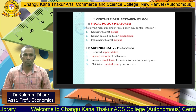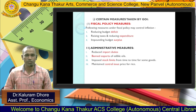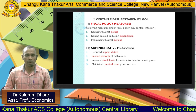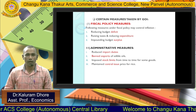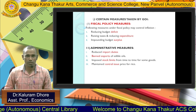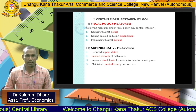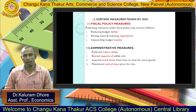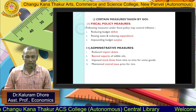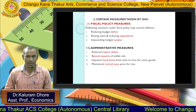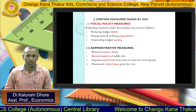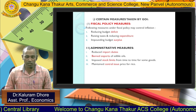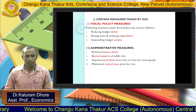Welcome back. We were discussing certain measures taken by the Government of India. We already discussed fiscal policy measures briefly. I would like to explain reducing the budget deficit, which is related to the government. Second, raising taxes — direct tax and indirect tax — the government has to increase these according to the inflation level of the country, and also reducing expenditure according to necessity.